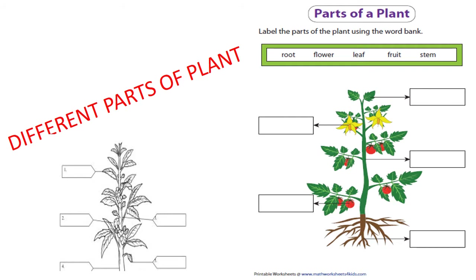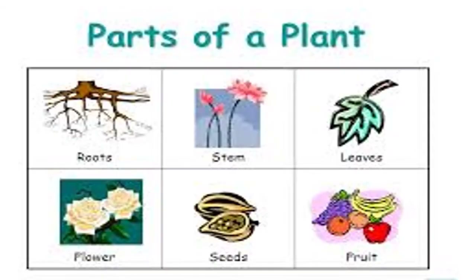Label the parts of the plant using the words: root, flower, leaf, fruit, stem. You can guess very easily. To your right-hand side, the first column is leaf, the second one is stem, the third one is root. To your left-hand side, it's the flower and the fruit. So these are the parts we can label very easily.